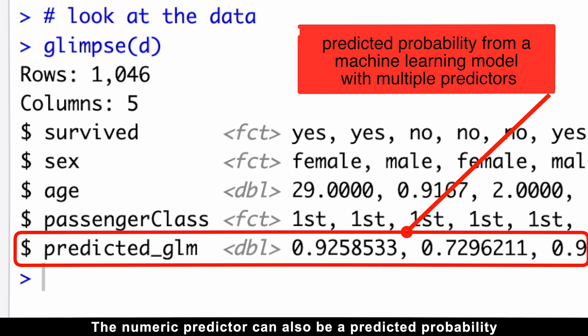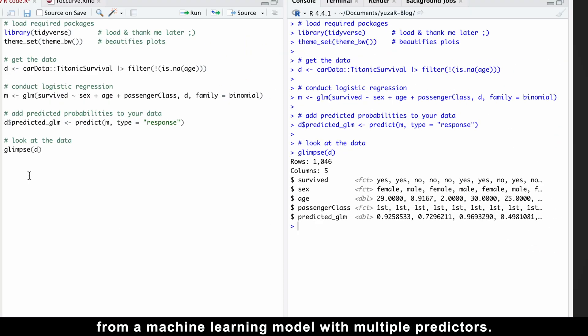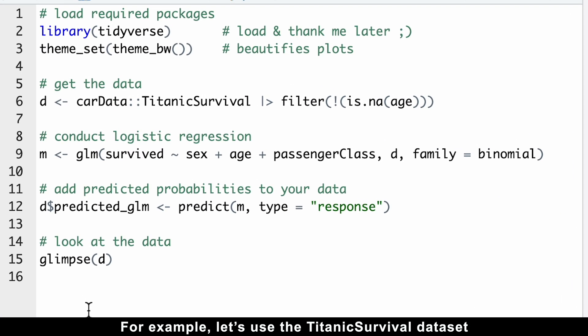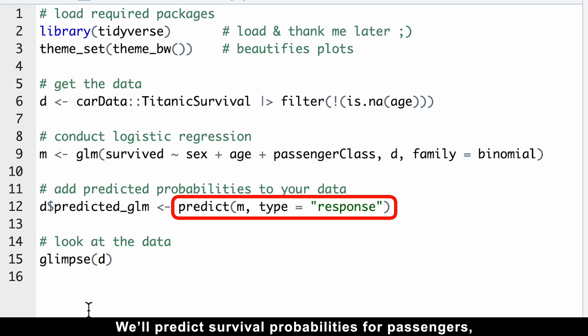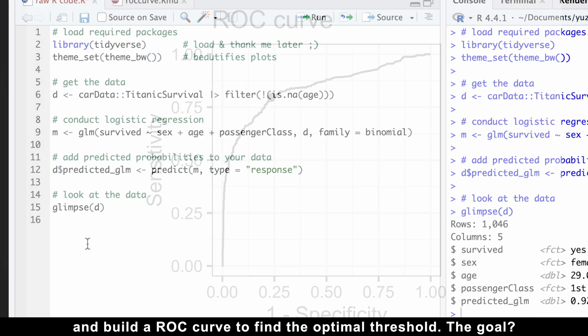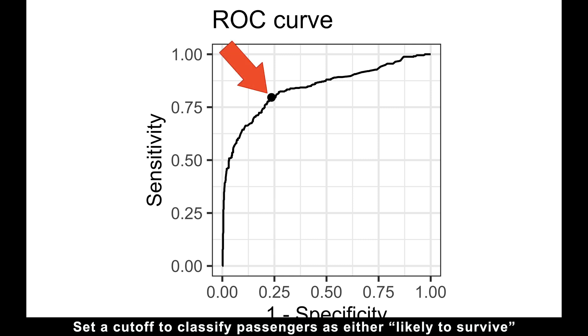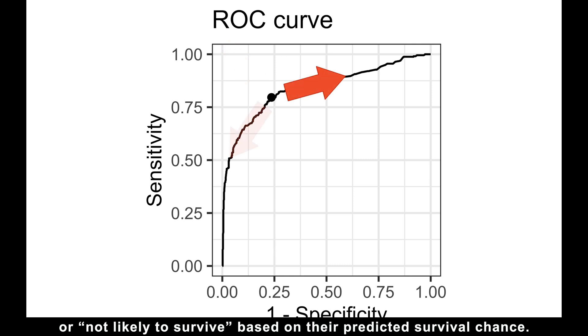The numeric predictor can also be a predicted probability from a machine learning model with multiple predictors. For example, let's use the Titanic Survival Dataset from Car Data Package. We'll predict survival probabilities for passengers, add them to our dataset, and build a ROC curve to find the optimal threshold. The goal? Set a cutoff to classify passengers as either likely to survive or not likely to survive based on their predicted survival chance.